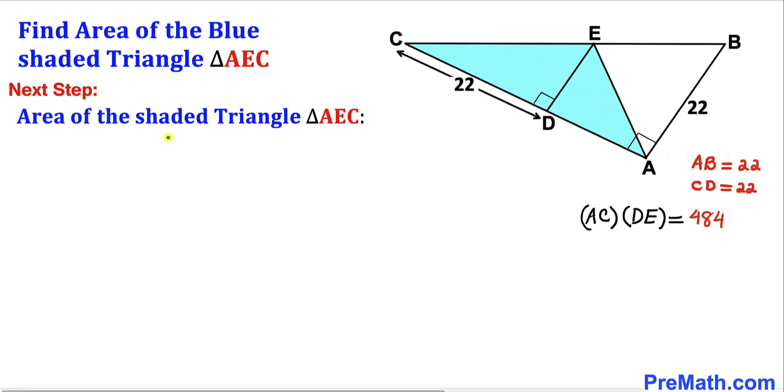Let's go ahead and calculate the area of this blue shaded triangle AEC now. This is the area we are going to find. Let's recall the area of a triangle formula: it is equal to a half times base times height.